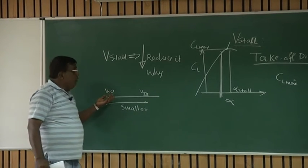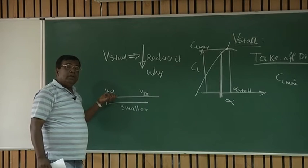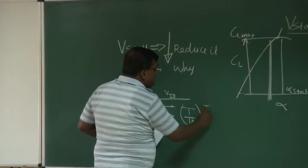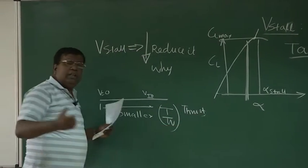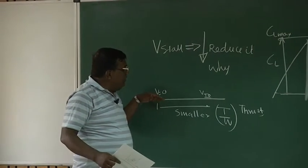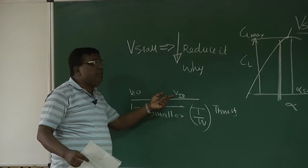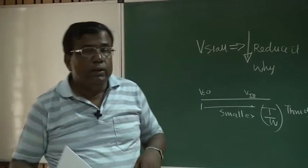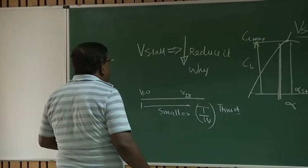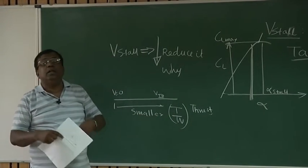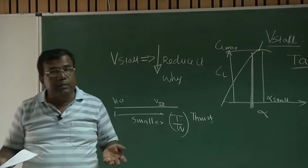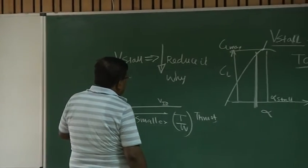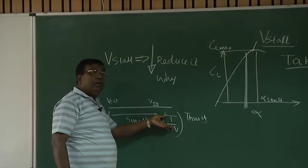If I want this distance to be smaller, what are the options I have got? I could put an engine which is having very high thrust to weight ratio, because this is responsible for acceleration. This T is thrust, which loosely means a high power engine. Then if it accelerates very fast, it takes smaller distance to get to V takeoff. If it is a lowly powered engine, it will take longer distance. So one way, you increase the T by W as high as possible, but then there is a problem. The moment you want to put a high thrust, high power or powerful engine, the weight may be a penalty, but there is a limit for engine.